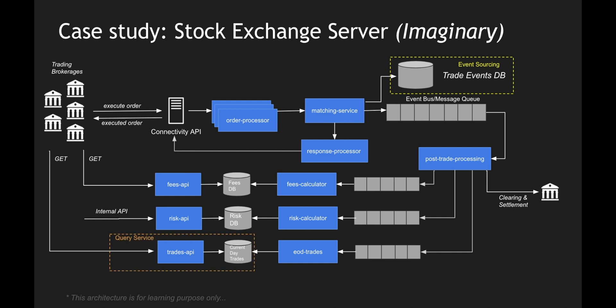The other part is CQRS. If you look at the trades API which we expose, that is where we have the querying pattern. The trades API is a GET — whatever we query — and that's why we are calling it a query service, because we retrieve all the trades using it. We executed orders using writes from the connectivity API, and we use the trades API to query the data in a different database because we want to see only the current day trades.